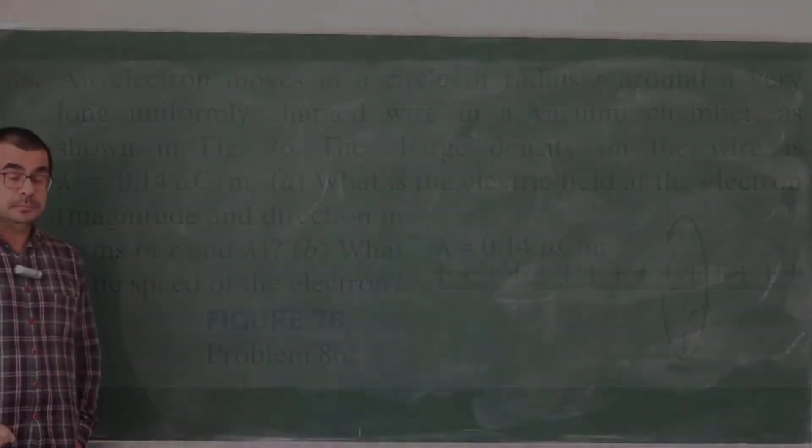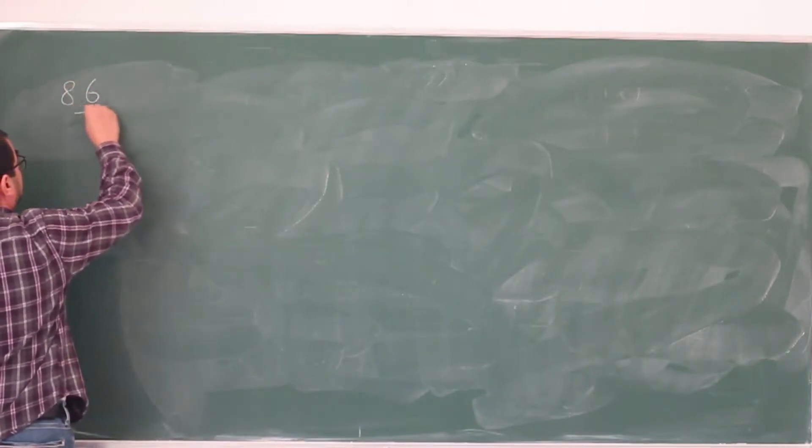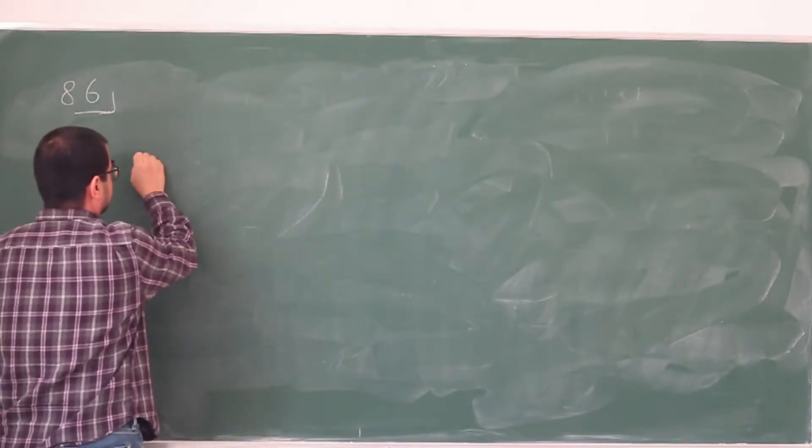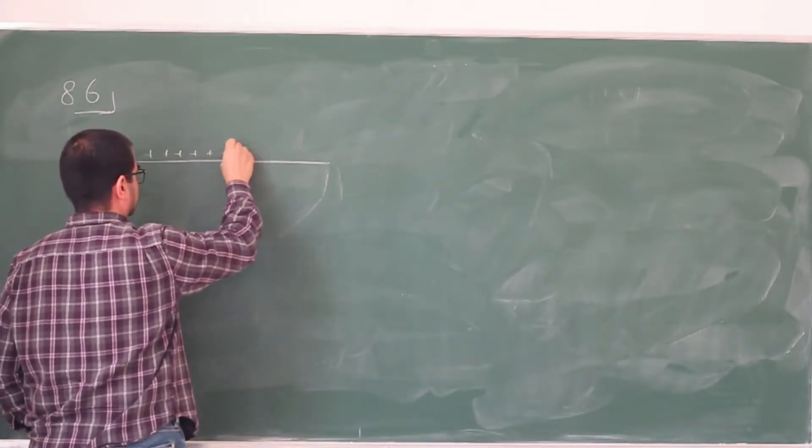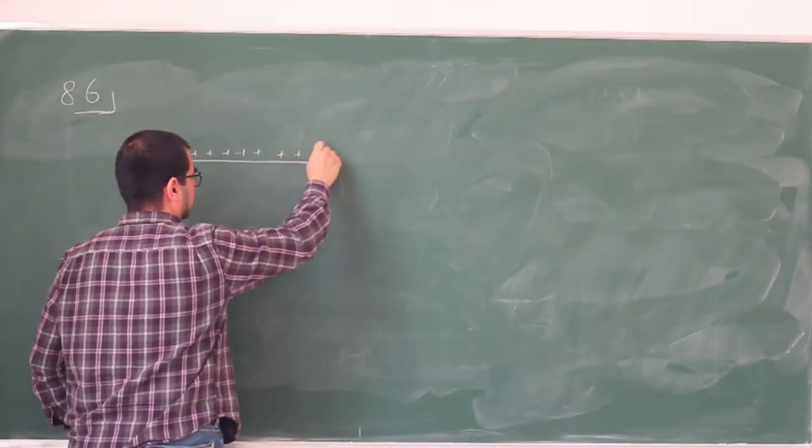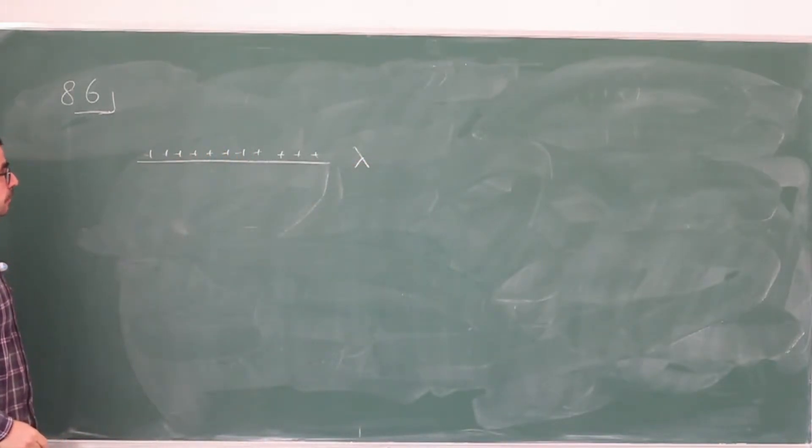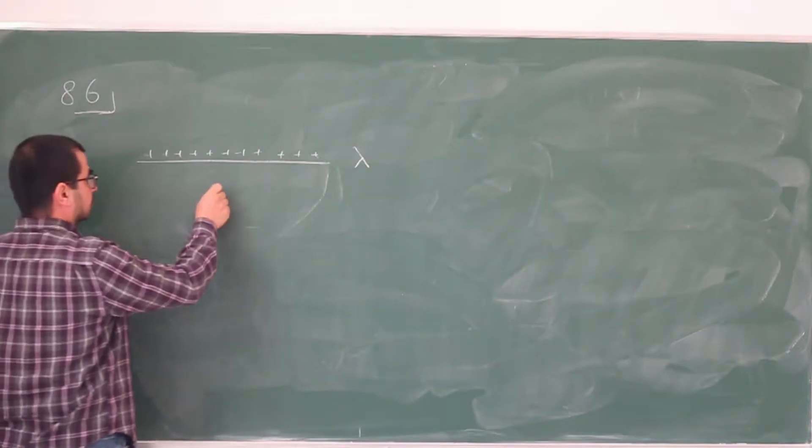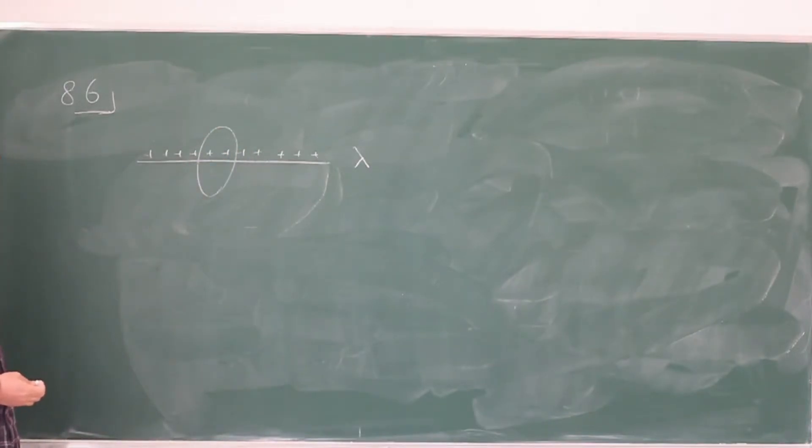Okay, so in problem 86, we have a line of charge that's positively charged, with some linear charge density lambda, and we have an electron that goes around it because of the electric field that's produced by this line of charge.